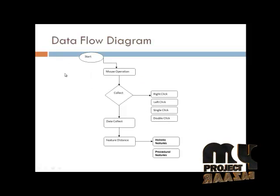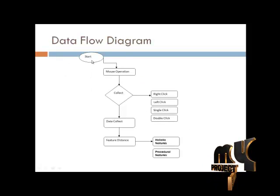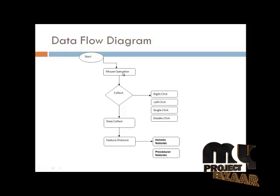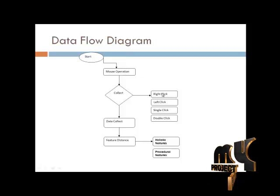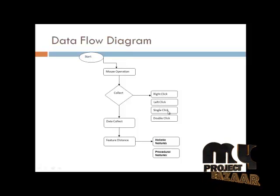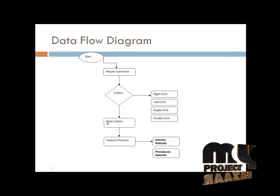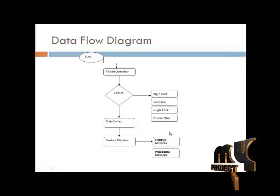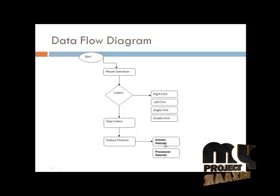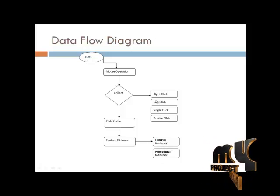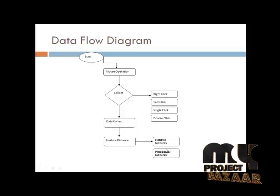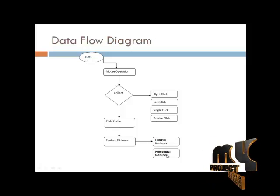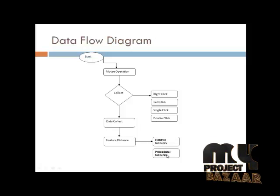Next we have the operation of the DFT. We restart the mouse operations to collect the result for right click, left click, single click, and double click. The collected data represents the feature distance for holistic features and procedural features. The holistic features get their result, and the procedural features get their result from the mouse movement position.